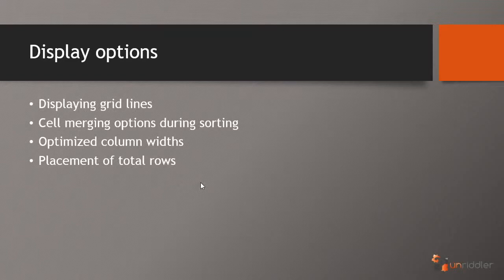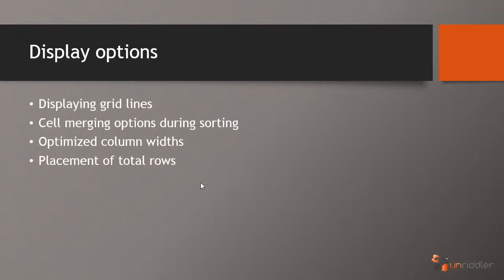There's also the notion of optimizing the column widths. Turning this option on or off can have some different effects. It's quite nice when you have a column with varying data — maybe a name column that has some very short names and other rows with very long names. Optimizing the column width is quite helpful. Finally, we'll talk about the placement of the total rows. By default the total row is at the very bottom and the subtotal row is at the bottom of that subtotal column set, but we have the option to move that as well.